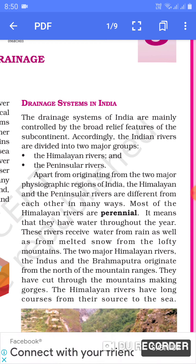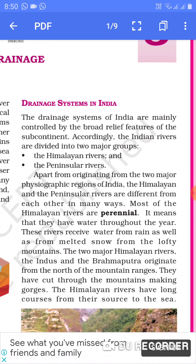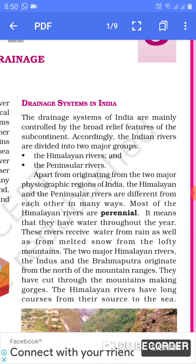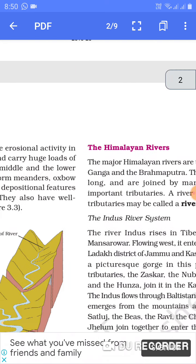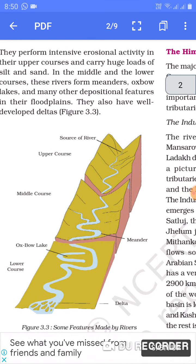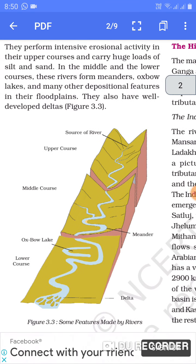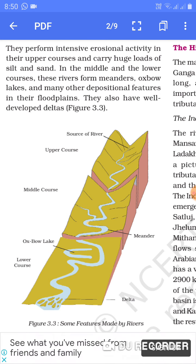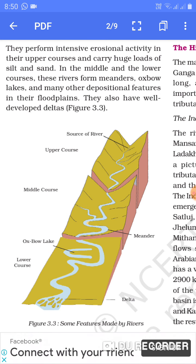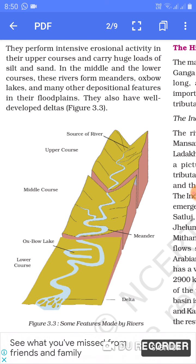The Himalayan rivers have a long course from their source to the sea. Ye nadiyan apne saath bohot sara silt aur soil leke chalti hai. They perform intensive erosional activity in their upper course and carry huge loads of silt and sand.